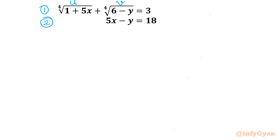Let us get started by considering the fourth root of (1 + 5x) as u, and the fourth root of (6 - y) as v. So, we can write our first substituted equation as u plus v equals 3.